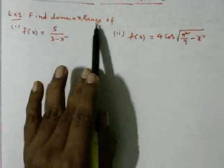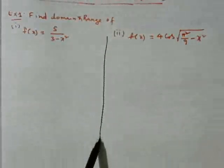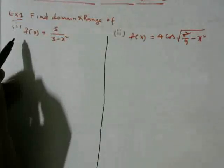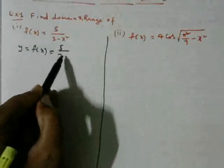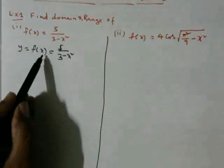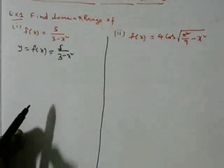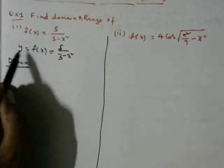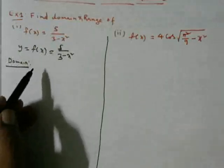The first question is to find the domain and range of two functions. For the first one, I am going to find the domain first. Simply, when y = f(x) = 5/(3 - x²), the set of values of x for which y is defined is the domain, and the set of values of y for corresponding x values in the domain is the range.